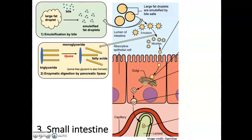After emulsification breaks large fat droplets into smaller droplets, enzymatic digestion occurs in the small intestine. These lipase enzymes are secreted from the pancreas into the small intestine. The enzymatic digestion of triglycerides involves breaking fatty acids off the triglyceride structure, usually leaving a monoglyceride and a couple of free fatty acids, and sometimes forming some free glycerol as well.